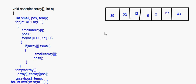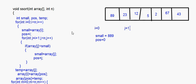Now let's trace how this works. We start with i equal to 0. Small is equal to array[0], which is 89, and pos is equal to 0. We start the inner for loop with j equal to i plus 1, so j is 1. Array[j] is 23 — 23 is less than 89, which is true. So small becomes equal to 23 and pos becomes equal to 1.